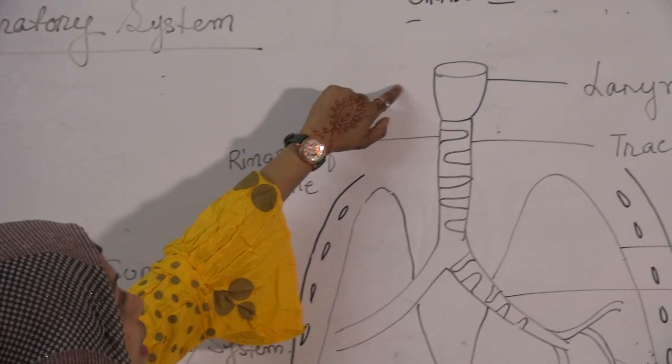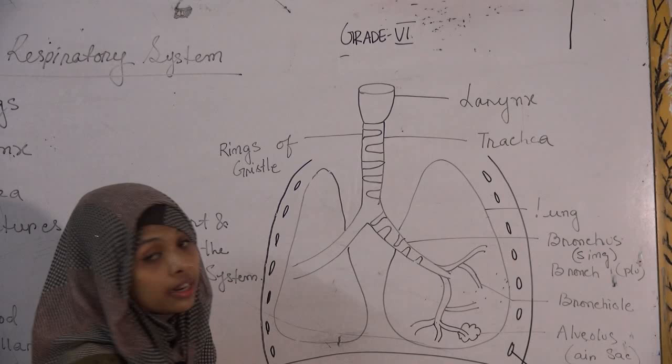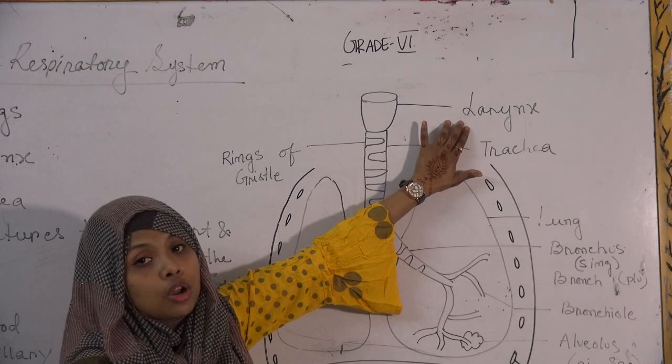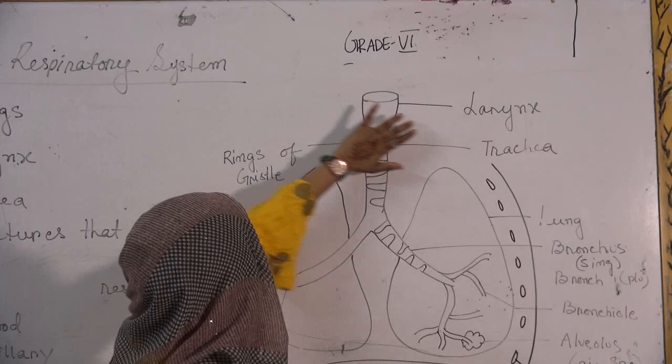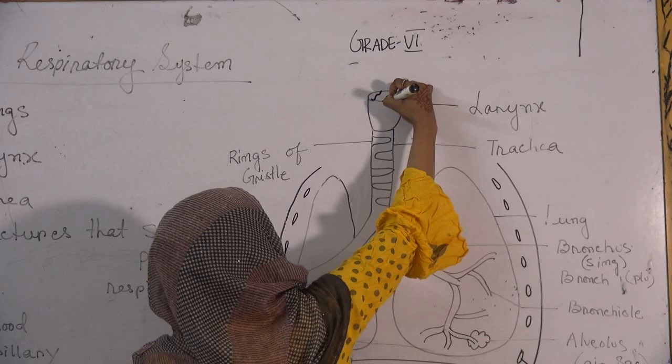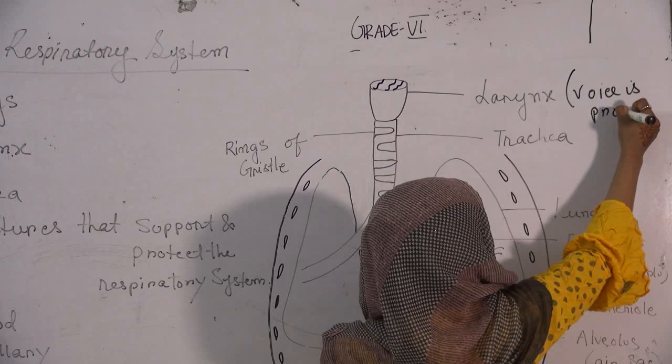In your book you might see that the larynx has been designated as the wind box, but I want you to use the scientific name — please do not use the common name in your exam papers or tests. The larynx is basically the wind box; it consists of chords which produce the voice. So voice is produced in your larynx.